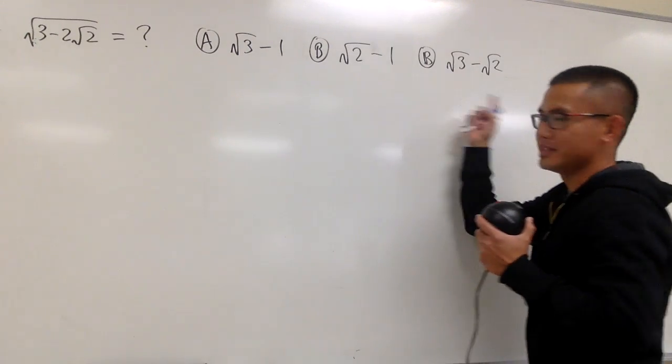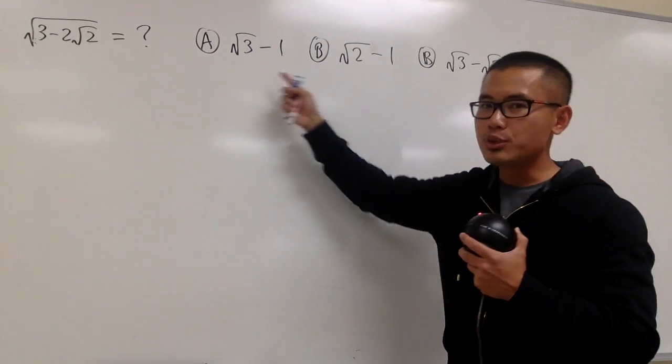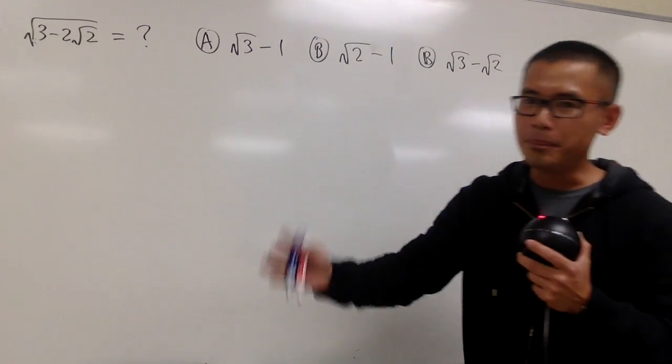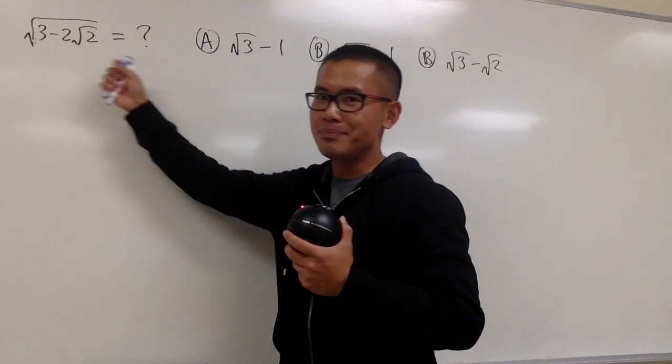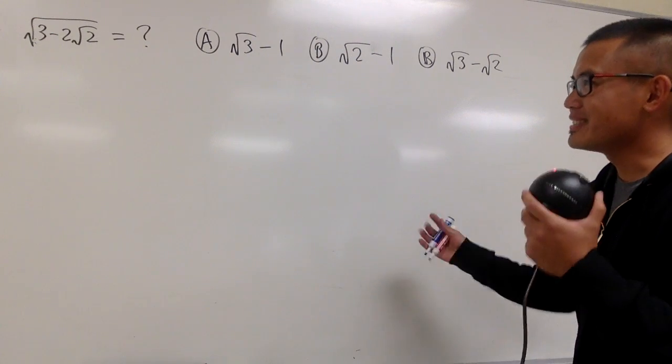And this is, in fact, the same as one of these choices. And as you can see, these choices right here, they don't have any big square root on the outside. So, how can that be the case? It's crazy.